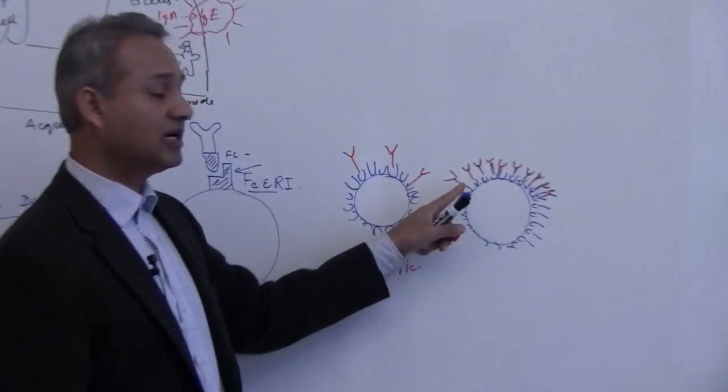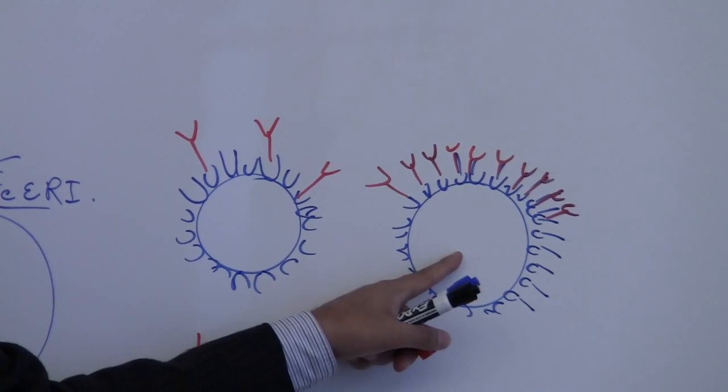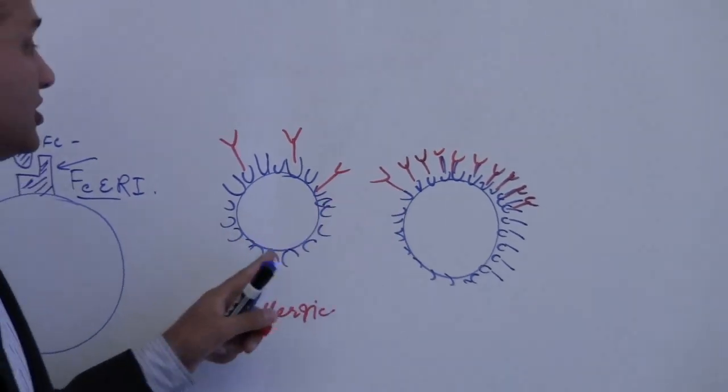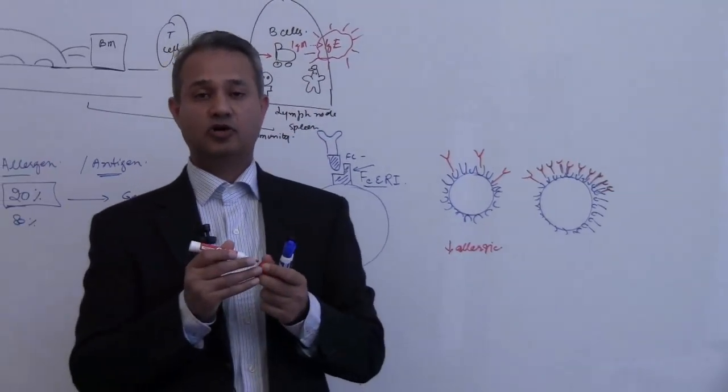As soon as these IgEs will become triggered and do the function, this mast cell is going to do its action. So let us continue discussing how that action happened. We are going to go inside the cell and talk about it.